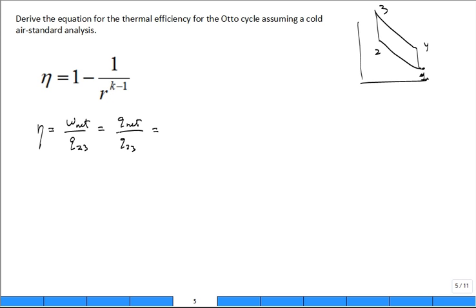And Q net, we already just said, was two of those components. The 1 to 2 is 0. The Q 2 to 3 is non-zero. 3 to 4 is 0. Q 4 to 1 is non-zero. So Q 2 to 3. So we find that our thermal efficiency is a ratio of 1 plus Q 4 to 1 divided by Q 2 to 3.